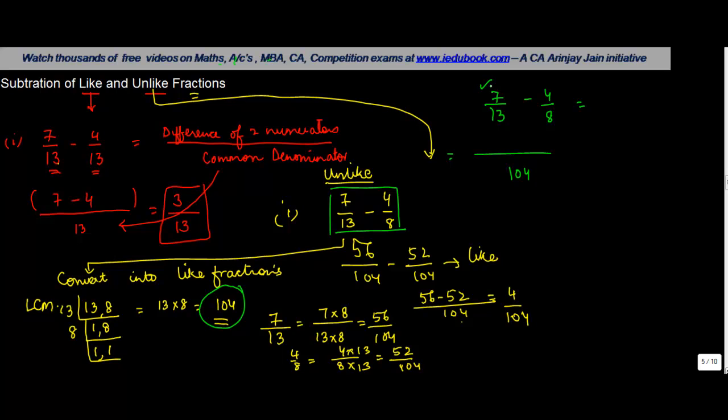Now, what gets substituted for 7 is the same way which we calculated earlier. So what we do is we take the LCM, we divide it by the denominator and multiply it by the numerator. So let's say for 7 upon 13, what we will get is 104 divided by 13 into 7. So 13 goes into 104, 8 times 8 into 7 will give you 56.